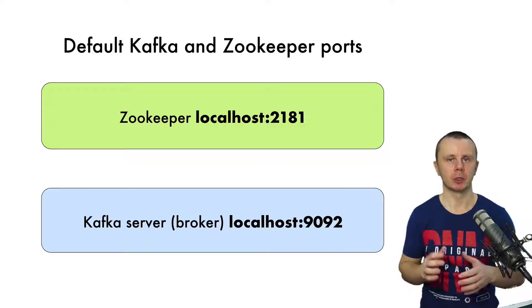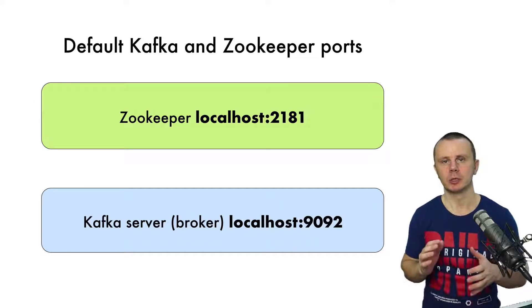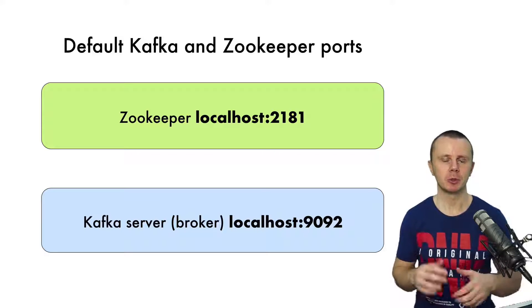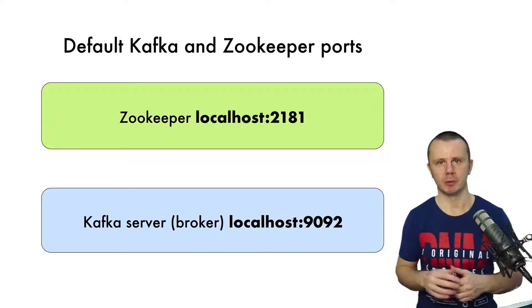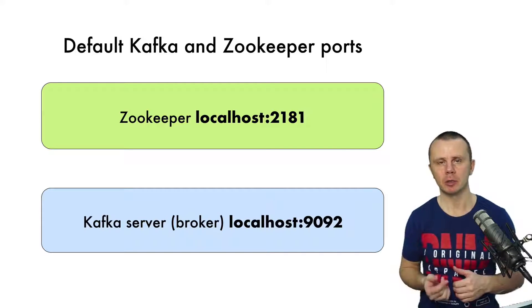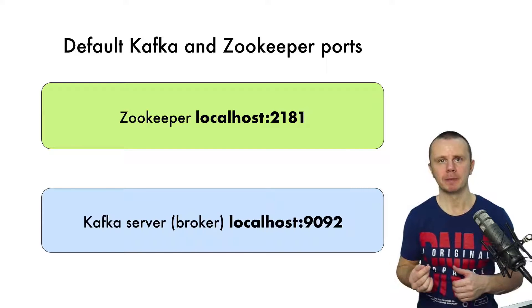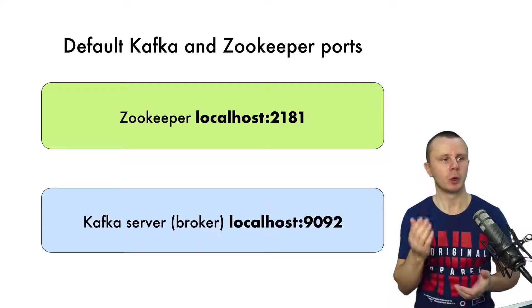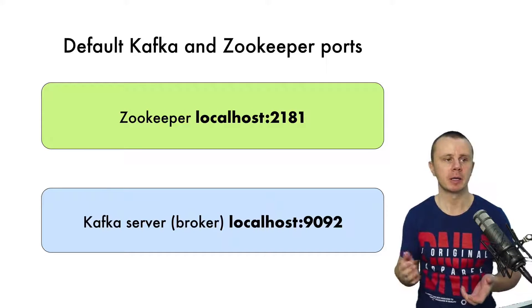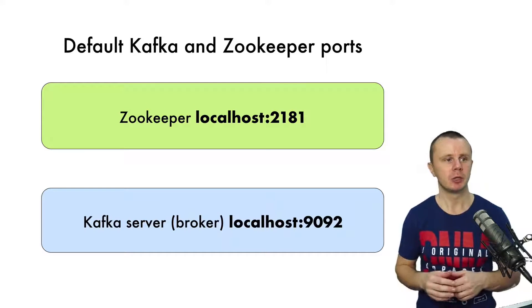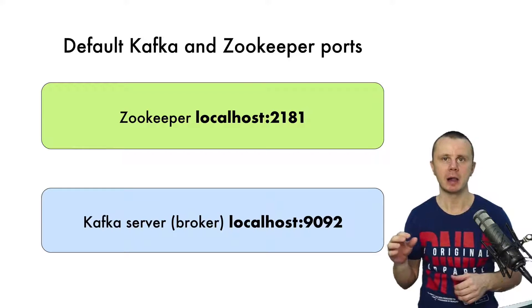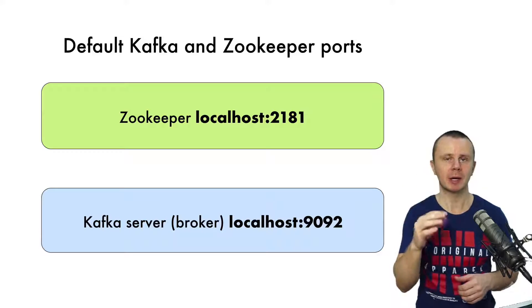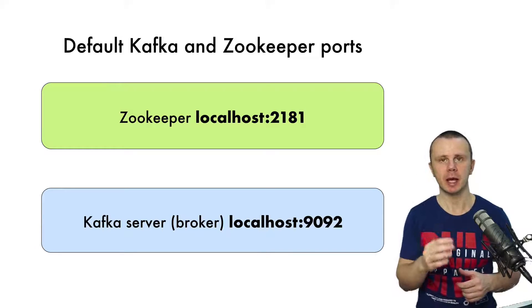Here is an important notice. If you are going to launch multiple ZooKeepers on the same computer, you need to use different ports, because every single port can be occupied only by a single process on a single computer. That's why if you want to run, for example, three ZooKeeper servers on the same computer, you need to adjust the configuration files and create separate configuration files for every ZooKeeper instance with different ports.